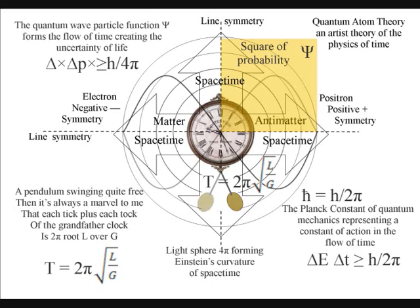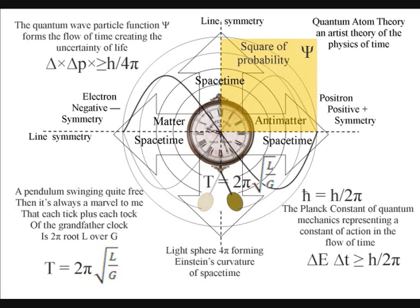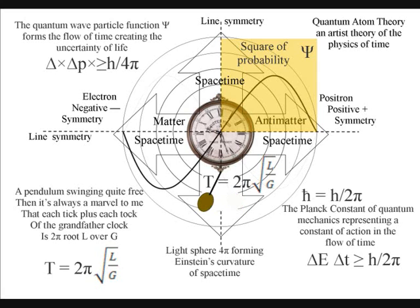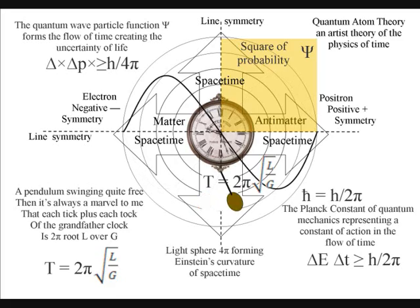Note also that the oscillating wave represents harmonic motion, and that the equation representing the movement of the pendulum is typical of equations representing the movement of objects, with 2 pi representing a universal process of spherical symmetry forming and breaking, that we see and feel as the flow of time.